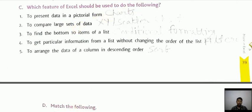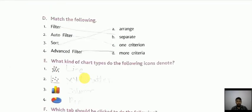Next is major column: so filter is separate, auto filter one criteria, advanced filter more criteria. Next is sort is arrange. Next, what kind of charts do the following? First one is line, next one is XY scatter, then next one is column, then next one is pie.